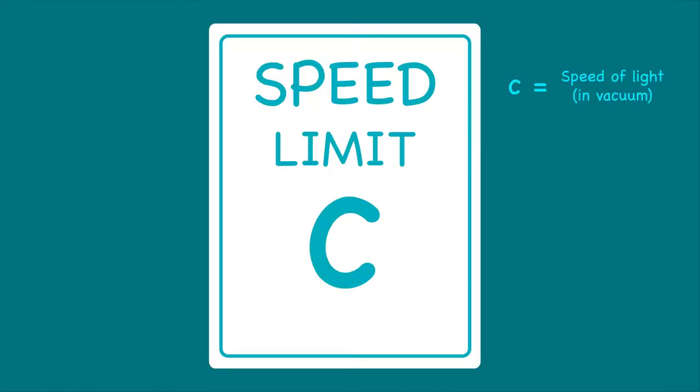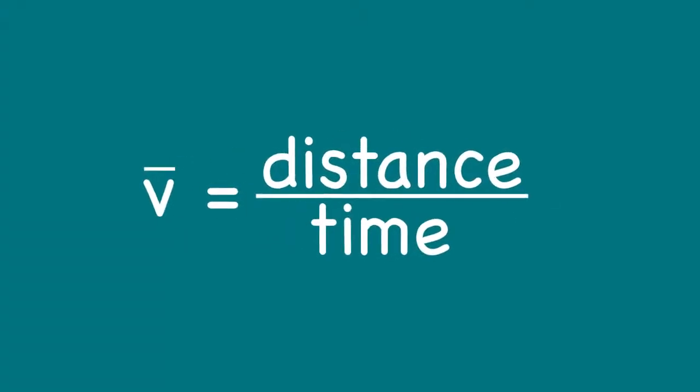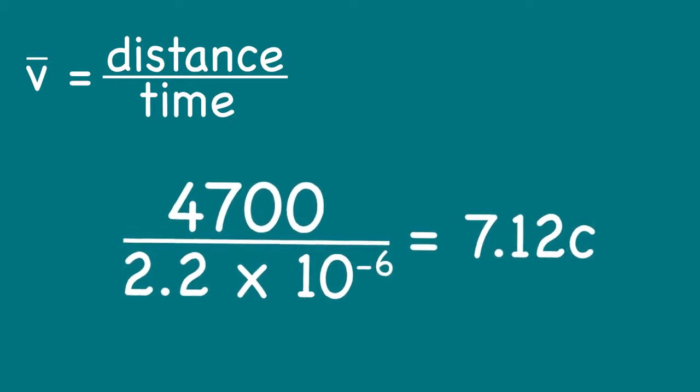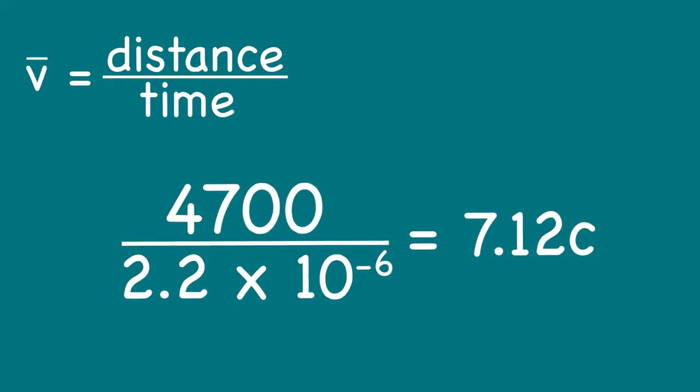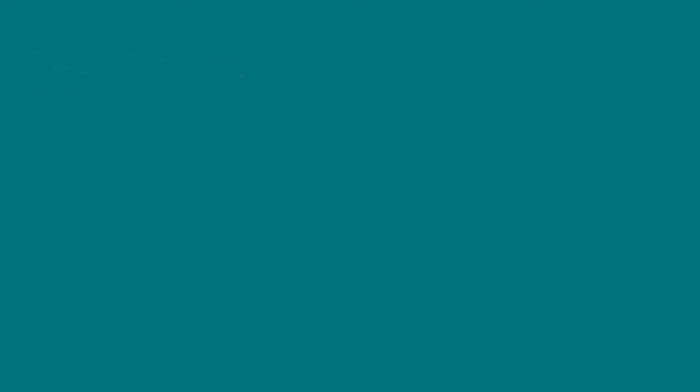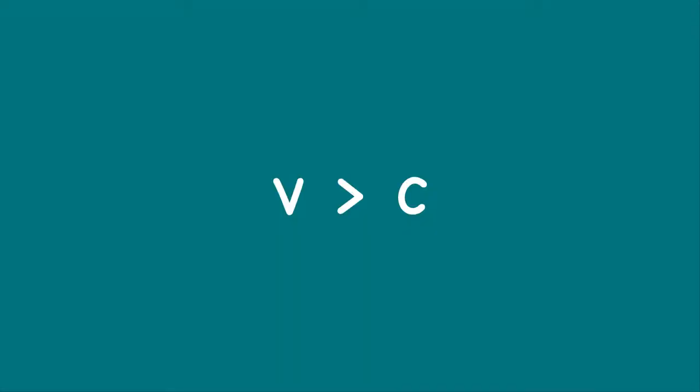But wait, don't the laws of physics prevent a 4,700 meter journey in 2.2 millionths of a second? Using classical Newtonian physics, namely average velocity equals distance over time, the muon would move way faster than light, 7.12 times faster in fact. We all know that this is impossible since the object has mass and anything with mass has to travel at a velocity less than the speed of light.